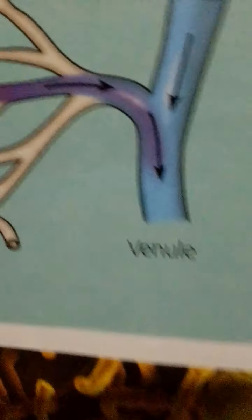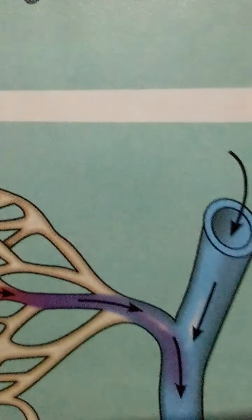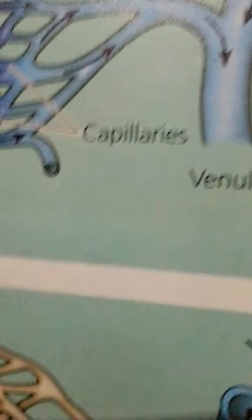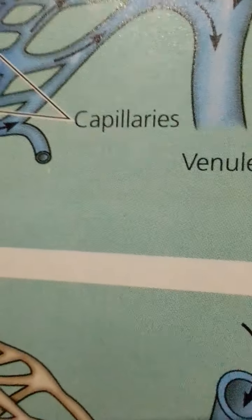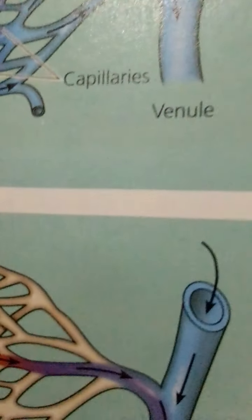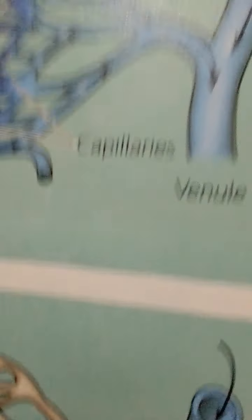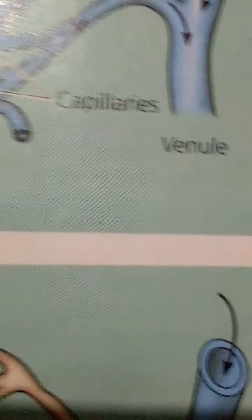The critical exchange of substances between the blood and the interstitial fluid that bathes the cells takes place across the thin endothelial walls of the capillaries. Some substances may be carried across an endothelial cell in vesicles that form by endocytosis on one side of the cell and then release their contents by exocytosis on the opposite side. Others simply diffuse between the blood and interstitial fluid.